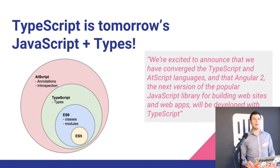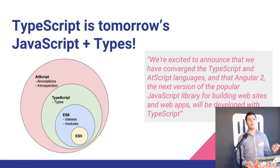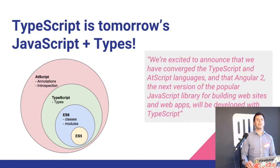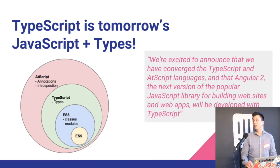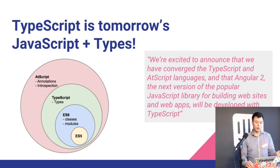A few months ago, Google was working on Angular 2 and they started to develop their own programming language called AtScript. When they were working on it, they realized it was very close to TypeScript. So they contacted Microsoft and said: we are building the exact same thing, but we need two things you don't have — annotations and introspection. The TypeScript team agreed to add those two things, and as a result Google killed the AtScript project.